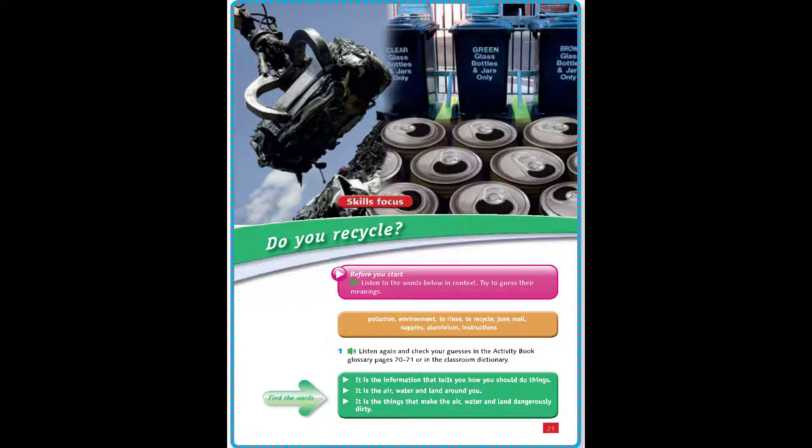Audio script: One, the kids ecology club tries to prevent pollution. Two, it helps young people to defend the environment. Three, rinse your plastic containers well before recycling them. Four, mixed color paper includes junk mail. Five, my mother always throws away my baby sister's nappies. Six, we can reuse or recycle aluminium. Seven, recycle plastic according to the instructions.